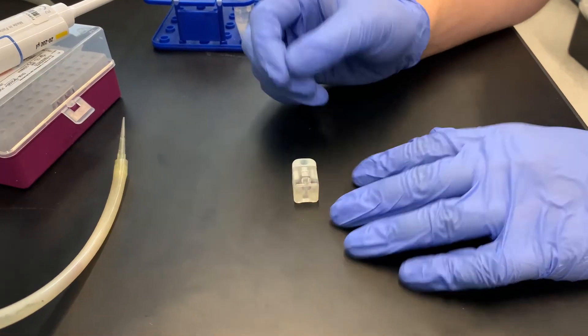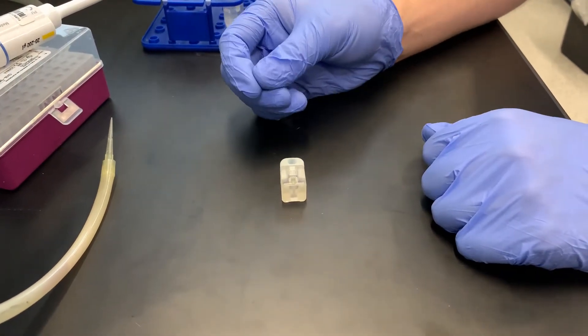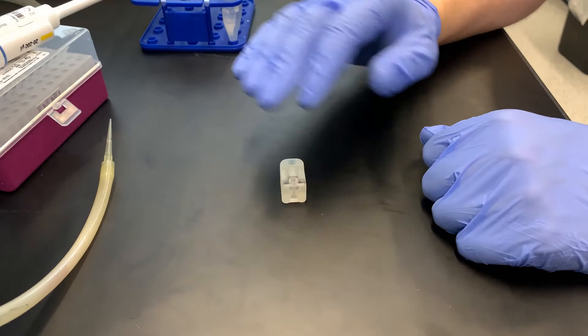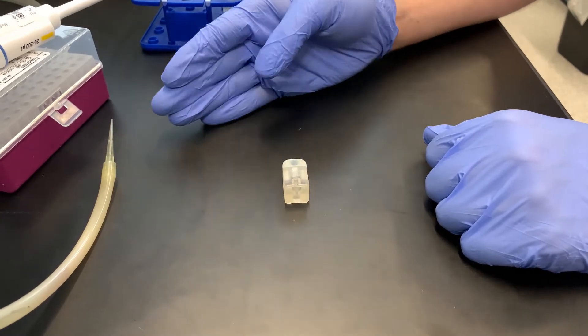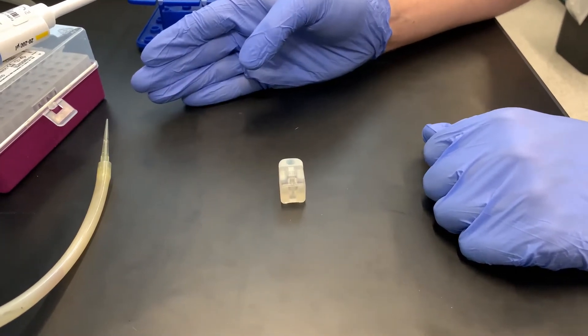Now that the cell is assembled, we want to flow in our salt solution. To ensure that the chip is entirely wet, we're going to put in IPA and then chase that with our 1 molar KCL.